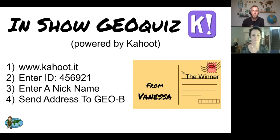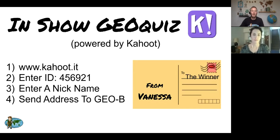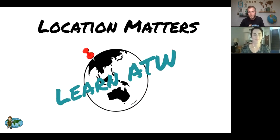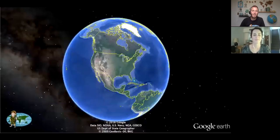Our Kahoot ID today is 456-921 — again, that's 456-921. If you've never used Kahoot before, just go to the URL kahoot.it and it will ask for this ID. I'll give it out again later so if you didn't jot it down, that's okay. You are watching Learn Around the World, and that means location matters.